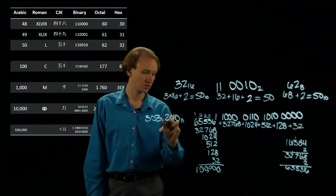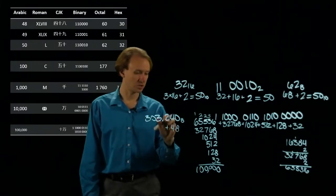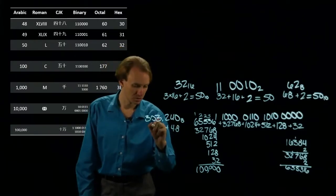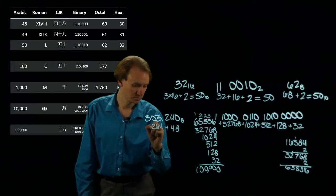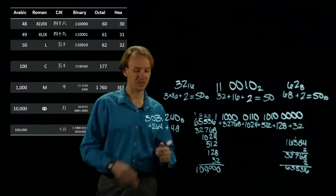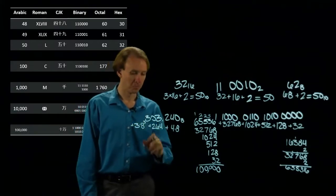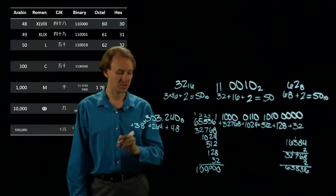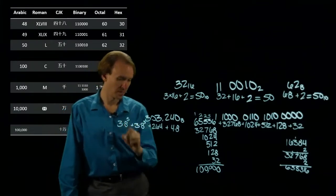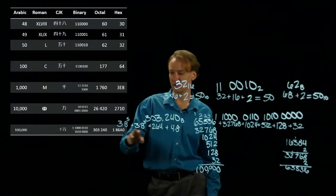So I have 0 plus 4 times 8 plus 2 times 8 squared. 2 times 8 squared is 64. Now I'm starting to get bigger numbers. Now I have 3 times 8 cubed, 0 times 8 to the 4th, but 3 times 8 to the 5th. So the first thing I'm going to need to do is figure out what is the 8 cubed and the 8 to the 5th.